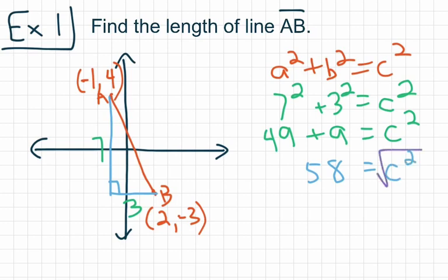Square root both sides. And we get c is going to be equal to 7.6. Because we're dealing with a coordinate grid, it's going to be 7.6 units. So the length of line AB is going to have a length of 7.6 units. We found that by finding the length of this leg is 7, this leg is 3. Using Pythagorean Theorem, we found that the length of side c is going to be 7.6 units long.